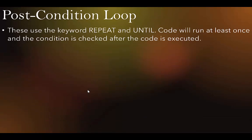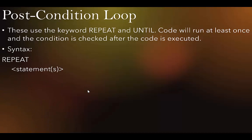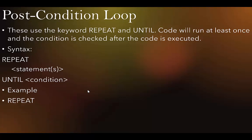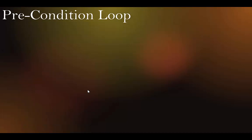The post-conditional loop uses the keywords REPEAT and UNTIL. The code runs at least once, and the condition is checked after execution. Syntax: REPEAT — your code — UNTIL condition = TRUE. Example: REPEAT INPUT password UNTIL password = 'Rufus' — which exits the loop once the correct password is entered.